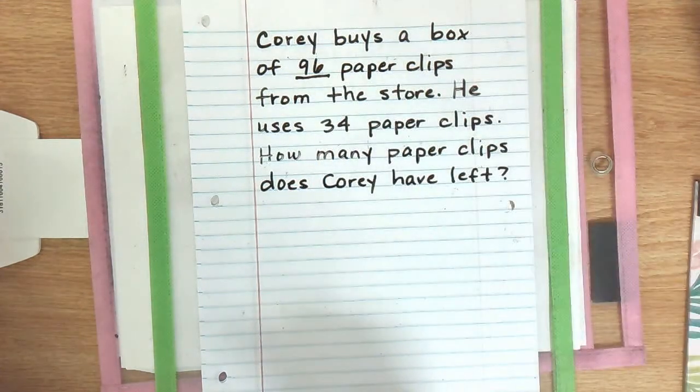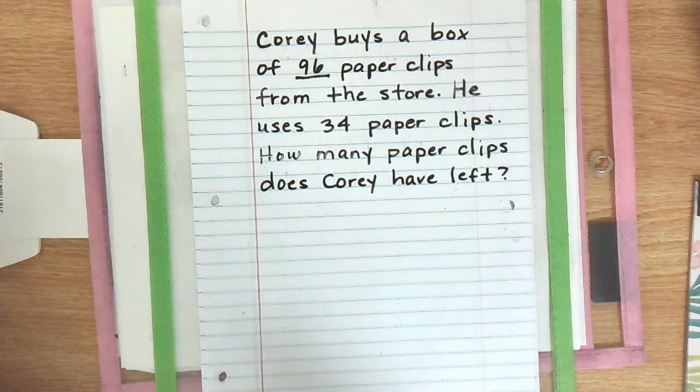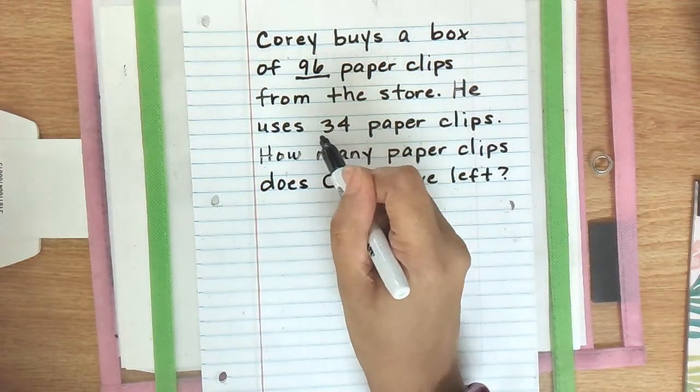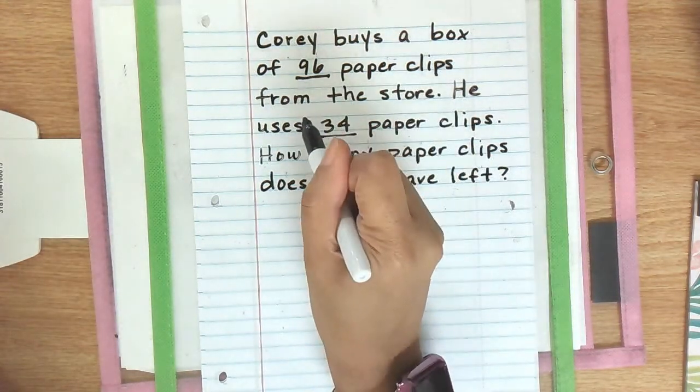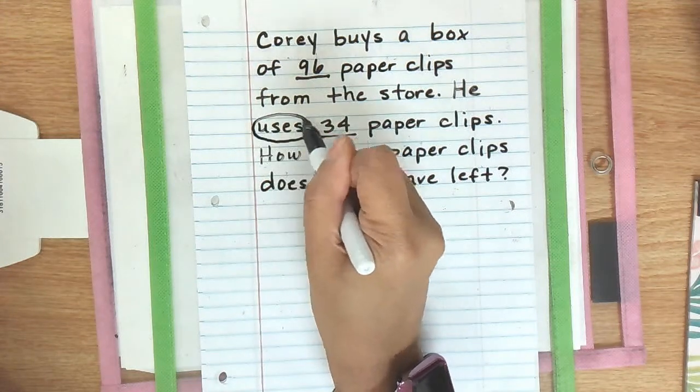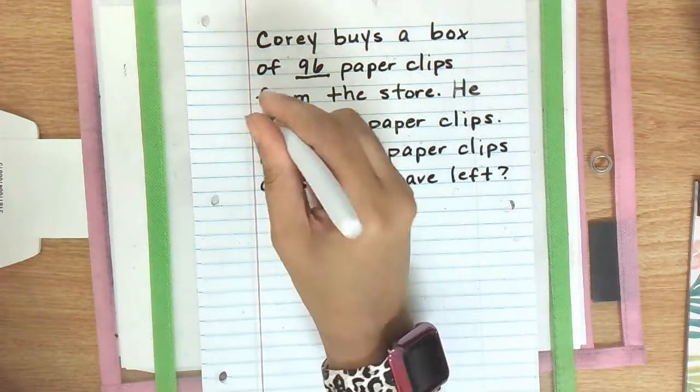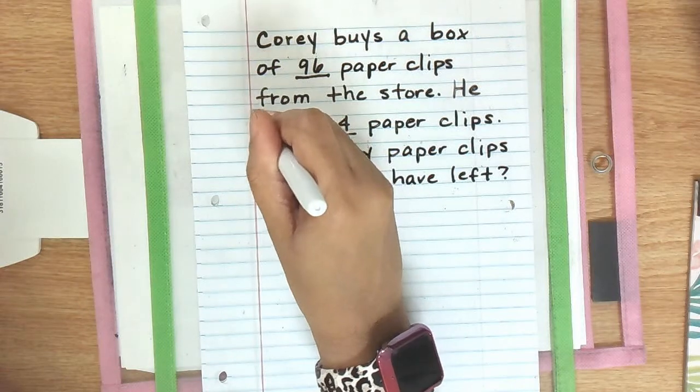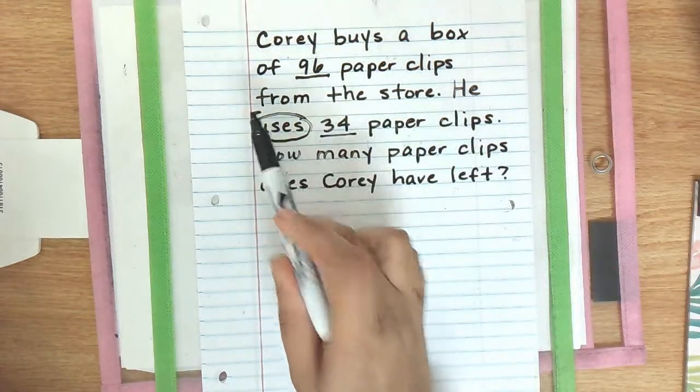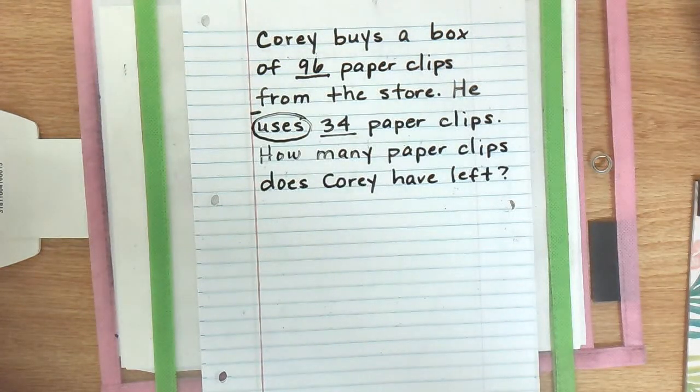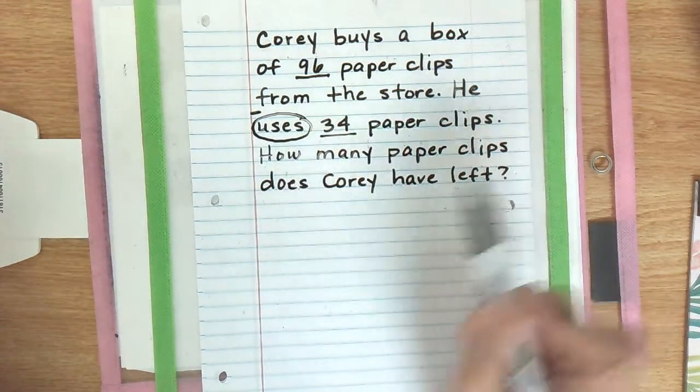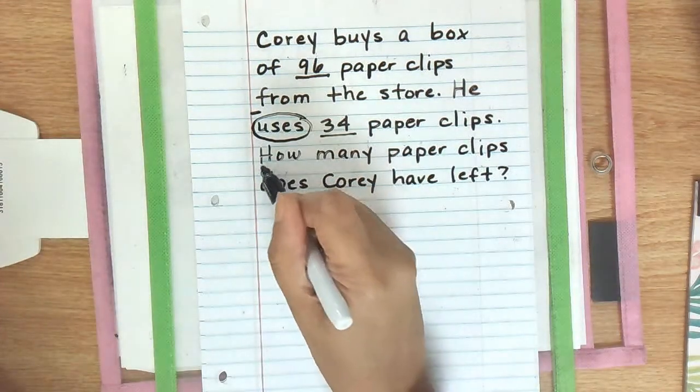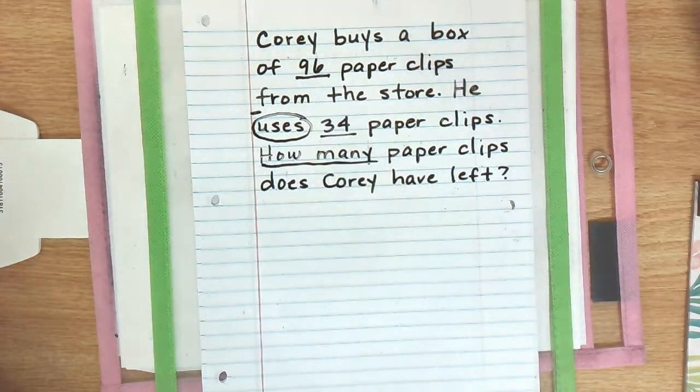Now we're going to read it again and pull out important information that we need. Corey buys a box of 96 paper clips from the store. What we need out of there is 96. So we're going to underline the number 96. Next, he uses 34 paper clips. There are two important things we need out of there. Of course, we need our number 34, but we also need that word uses. If you use something, you no longer have it or it's no longer new. So that lets us know that we are subtracting. So I'm going to circle that word uses and write a subtraction sign above it. Lastly, how many paper clips does Corey have left? We're always going to need that how many there.